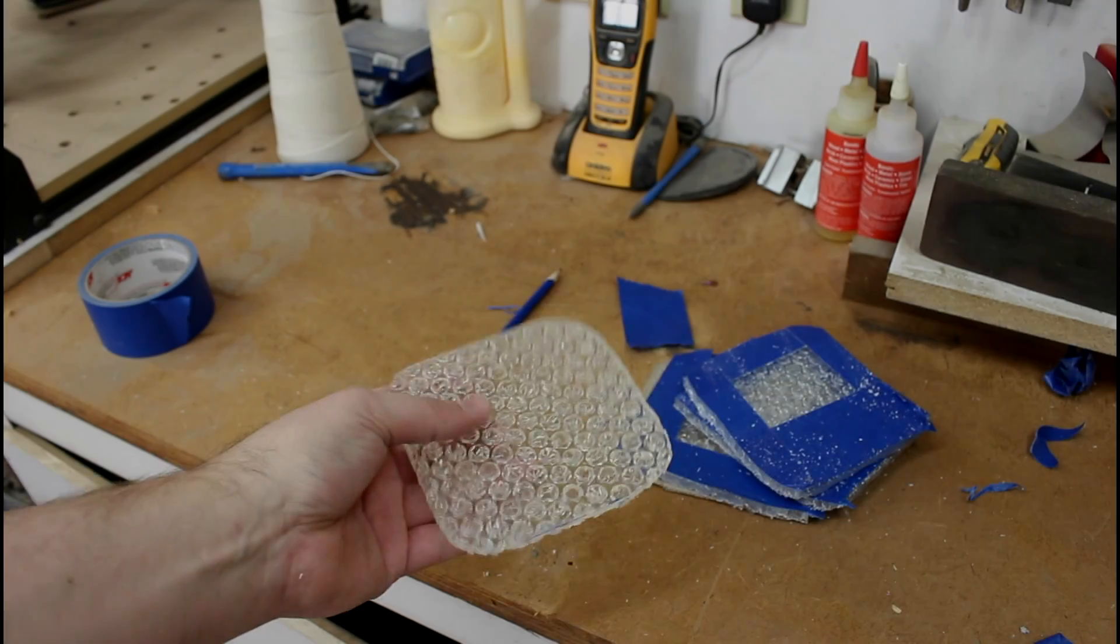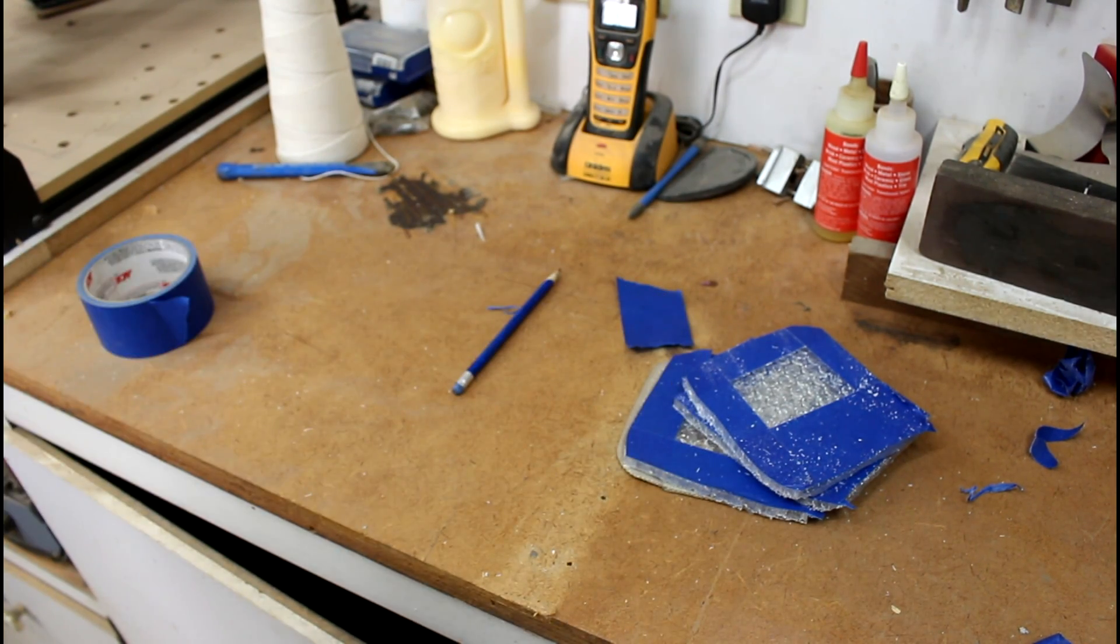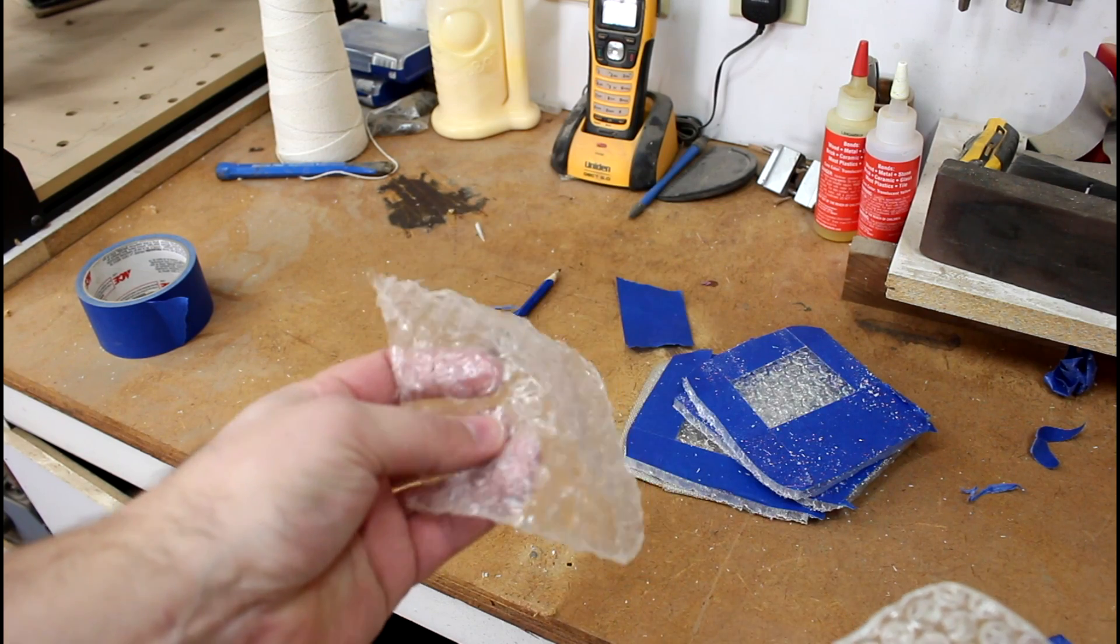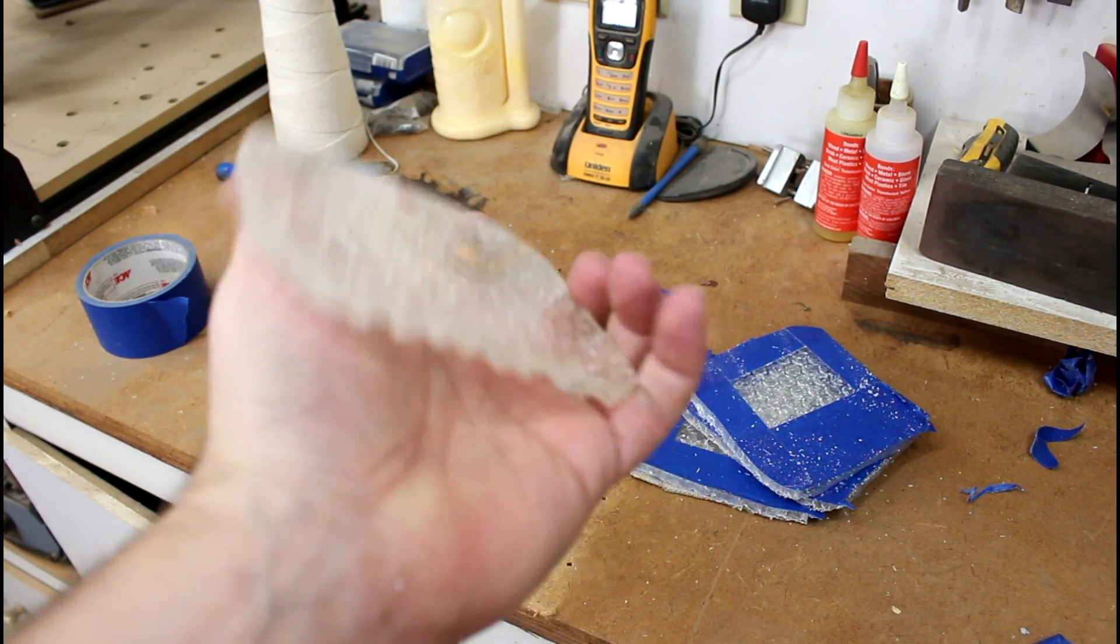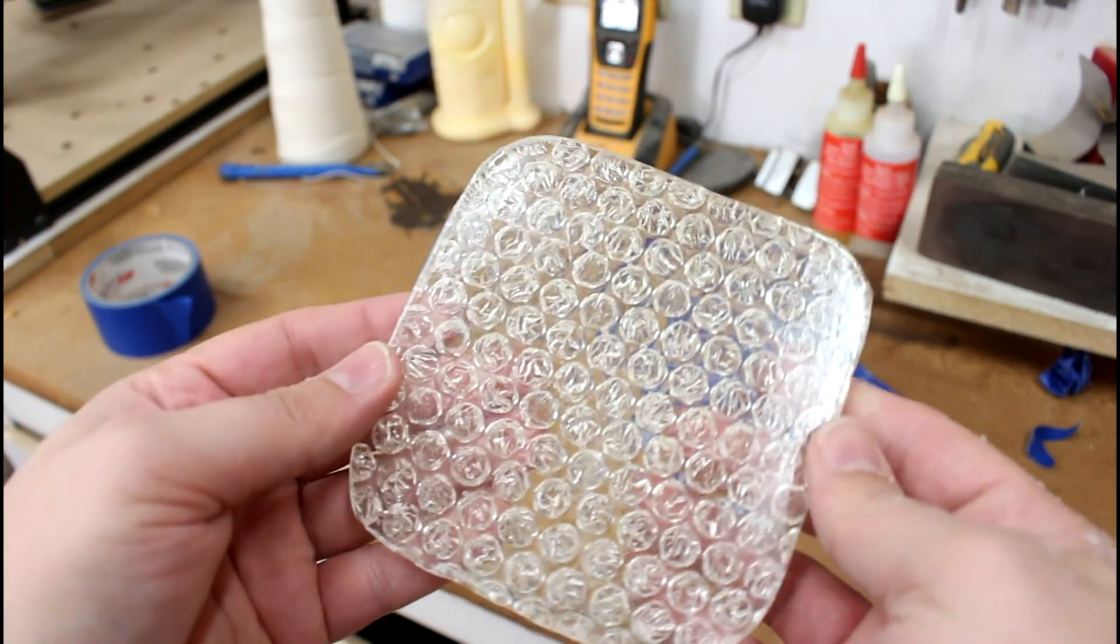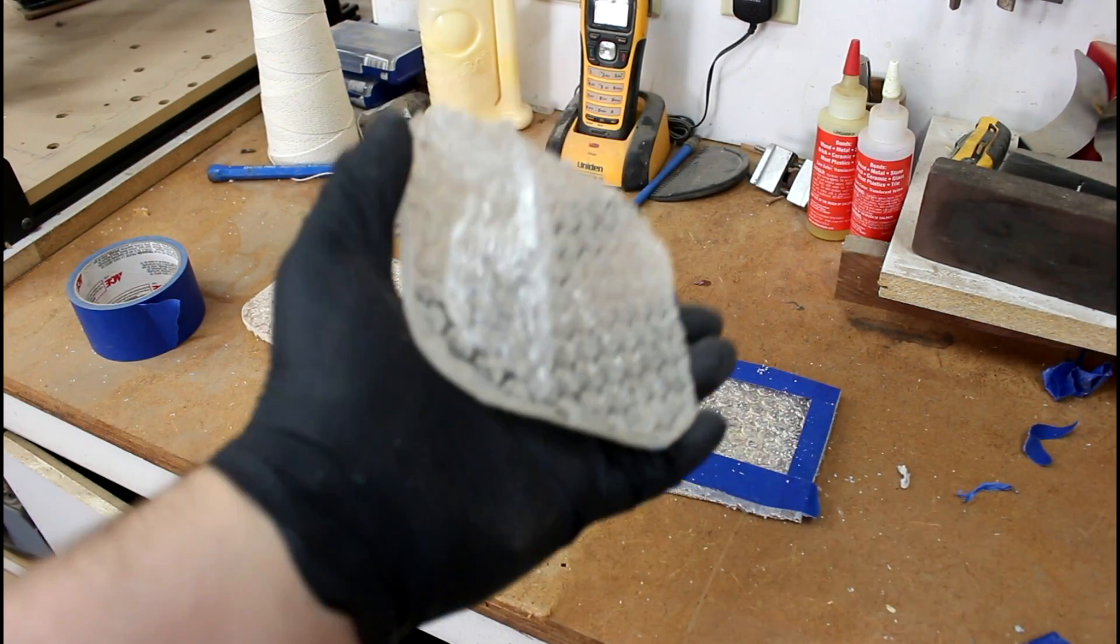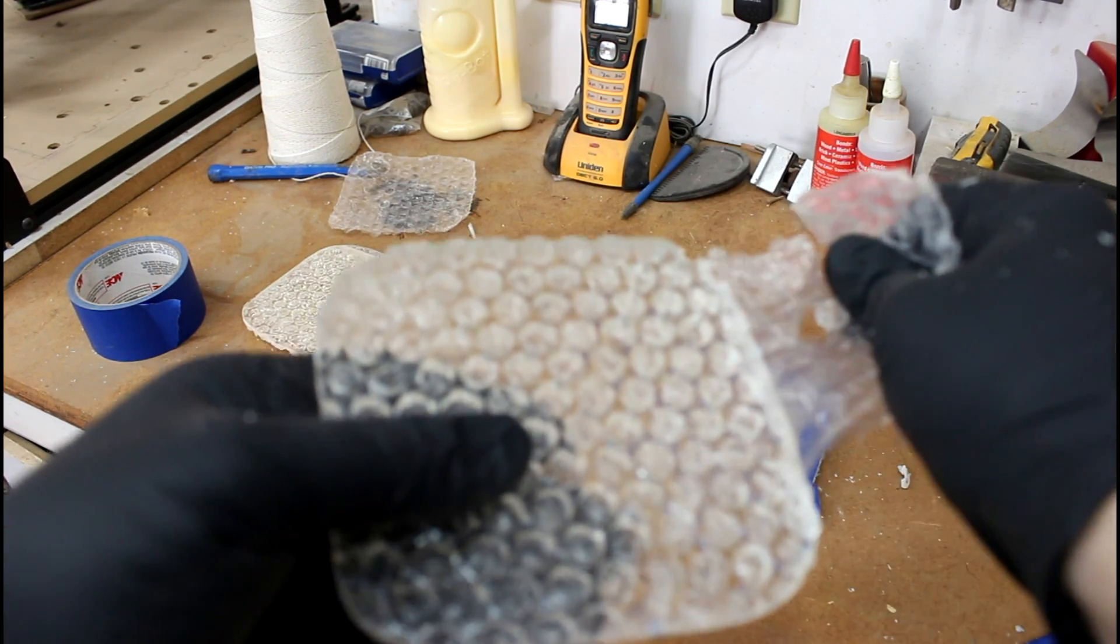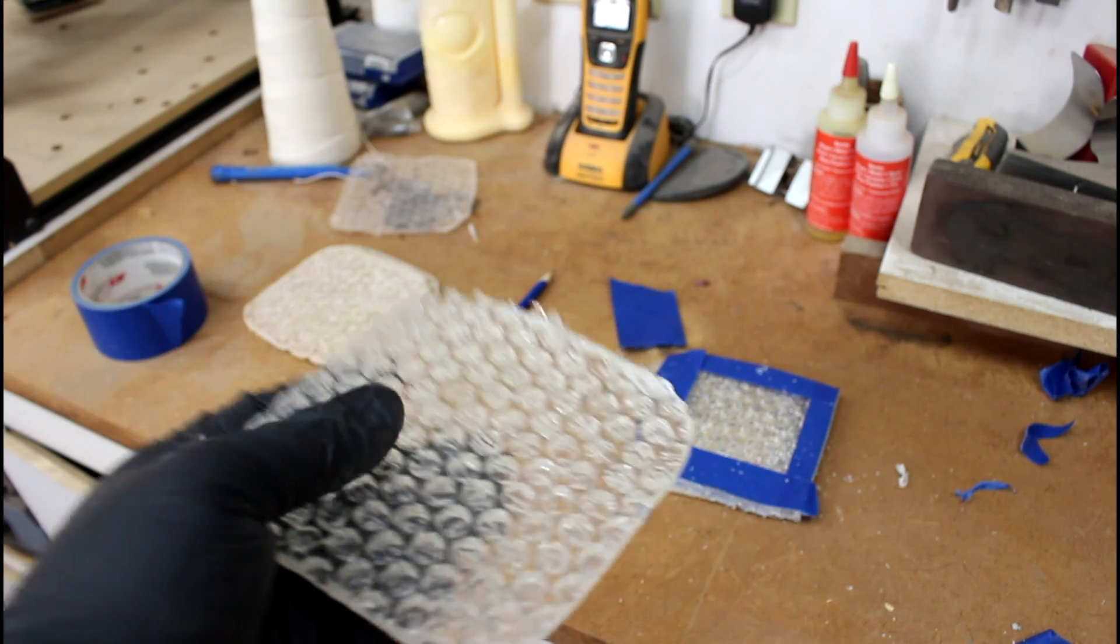So something unexpected just happened while I was sanding this. The sides heated up and since the bottom layer was so thin, the bubble wrap actually came out. What we're left with is this negative mold - these are actually holes in here, but it looks just like bubble wrap. It's happening to all of them.